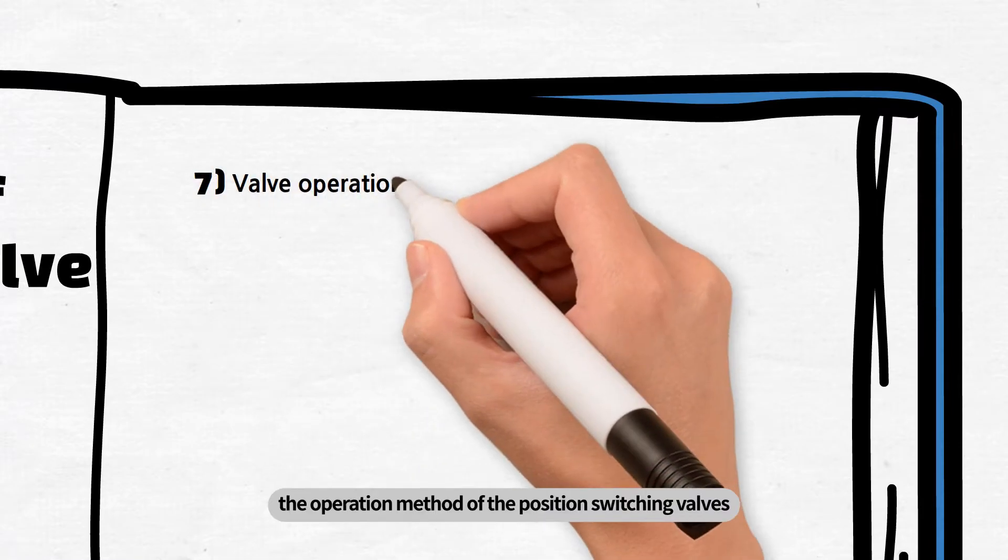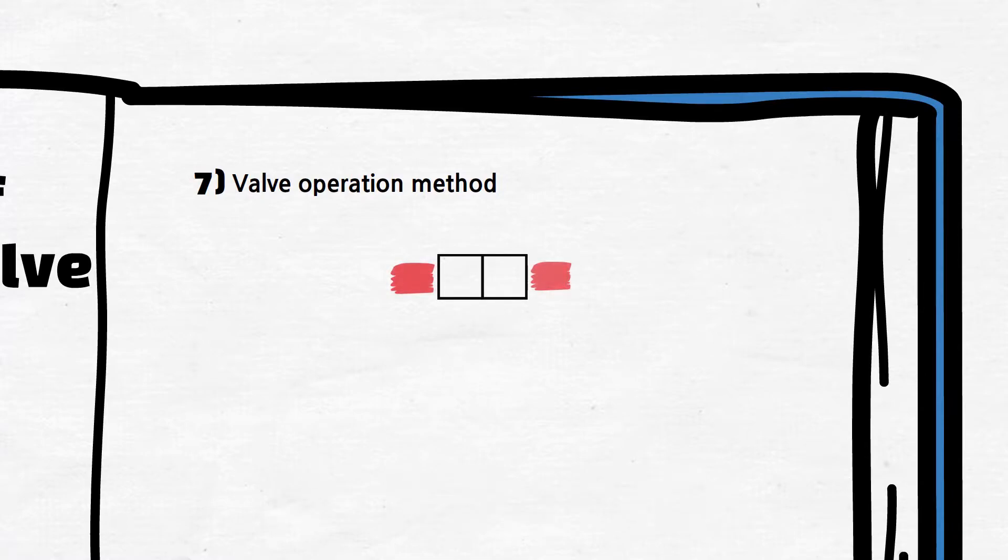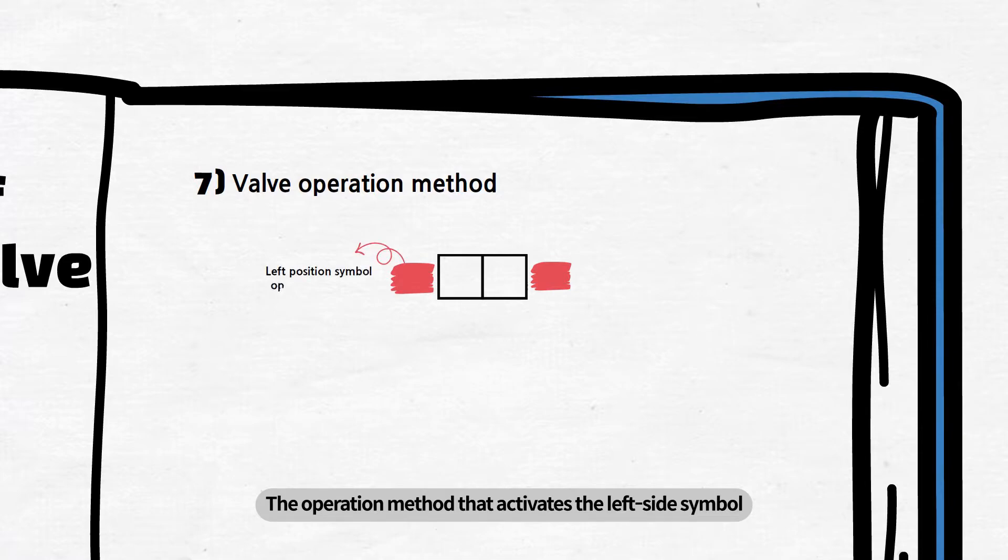Seventh, the operation method of the position switching valves is shown on both sides of the position symbol. The operation method that activates the left side symbol is displayed on the left, while that of the right-hand symbol is shown on the right.